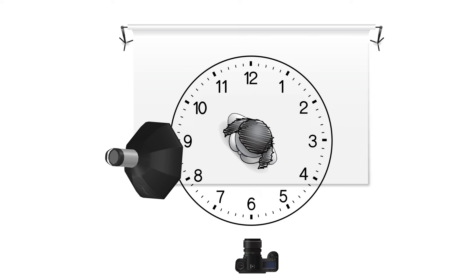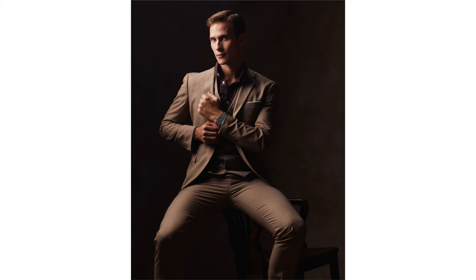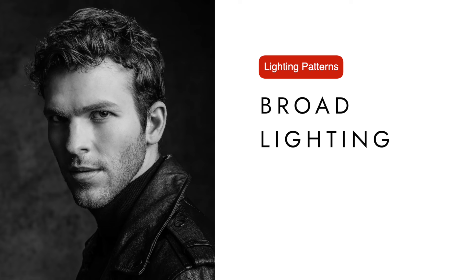Short lighting involves positioning the light source similarly to Rembrandt lighting, but you also turn the subject towards the light. This technique can have a slimming effect on the subject because most of their face will be in shadow.